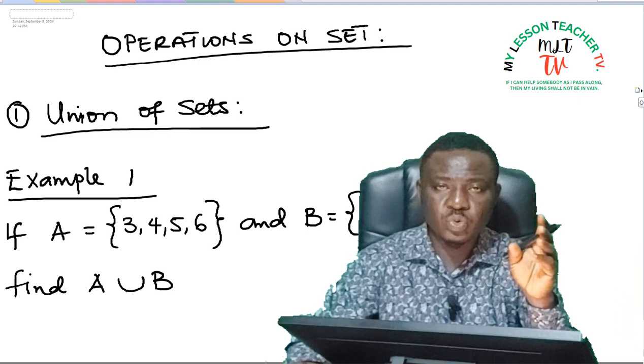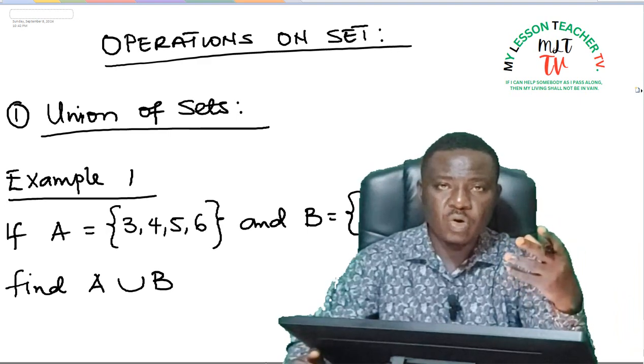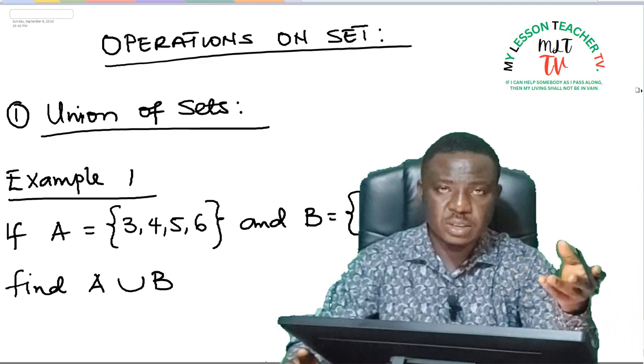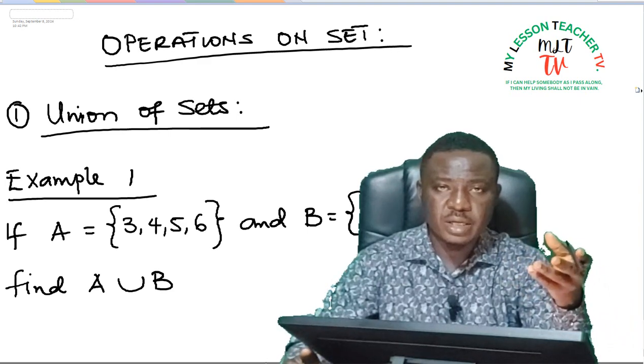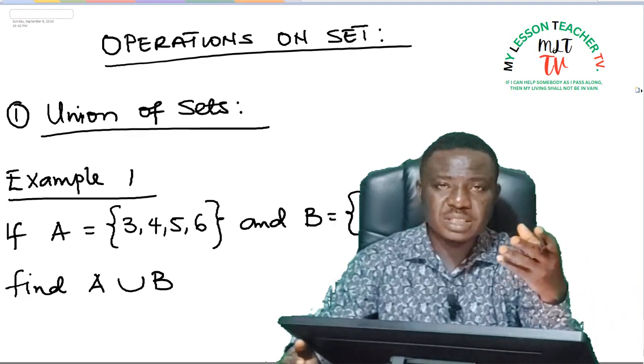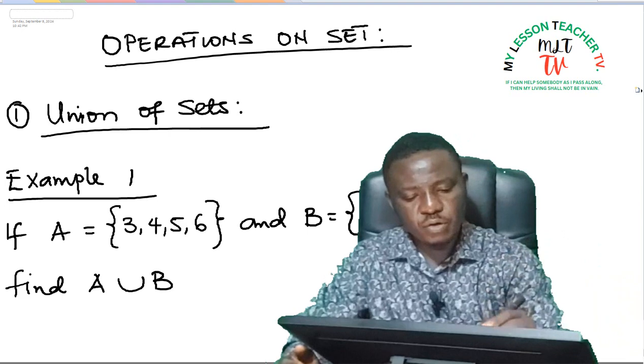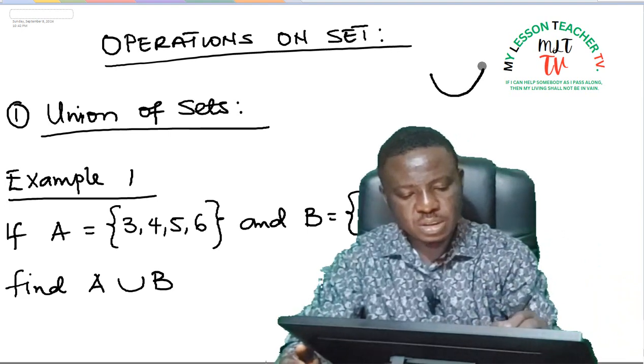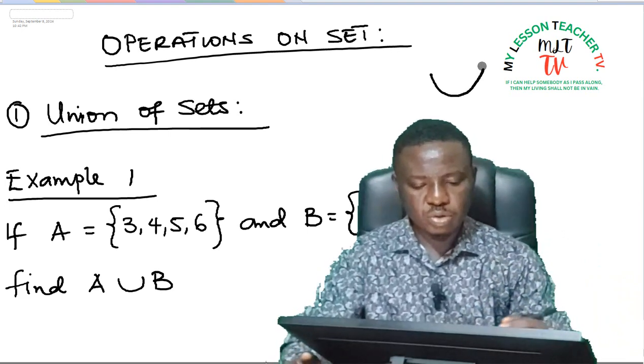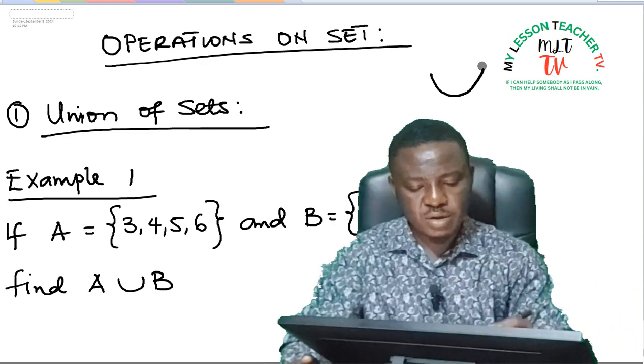The union of sets refers to the addition of all the elements of a set, of two sets. So when you hear the union of two sets, it means all the elements in set A plus all the elements in set B. The union of two sets can be represented using this symbol.